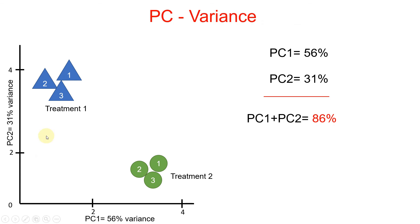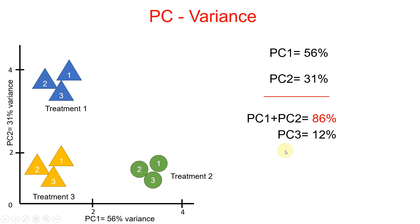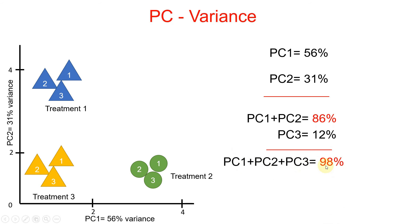Now let's look at another example to understand PCA showing variance in gene expression data across different treatments. The PC1 is 56% and PC2 is 31%, so the cumulative of PC1 and PC2 is 86%. What about the remaining 14%? If there is another treatment — treatment 3 — and PC3 in this example is 12%, then PC1, PC2, and PC3 together make up 98% of the variation in this transcriptomic data.